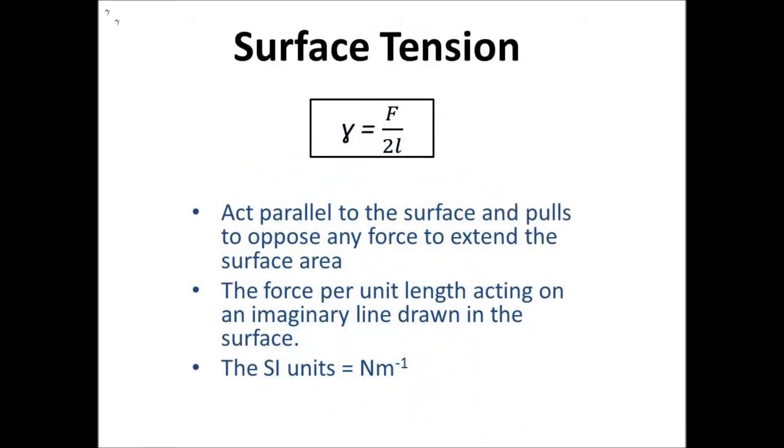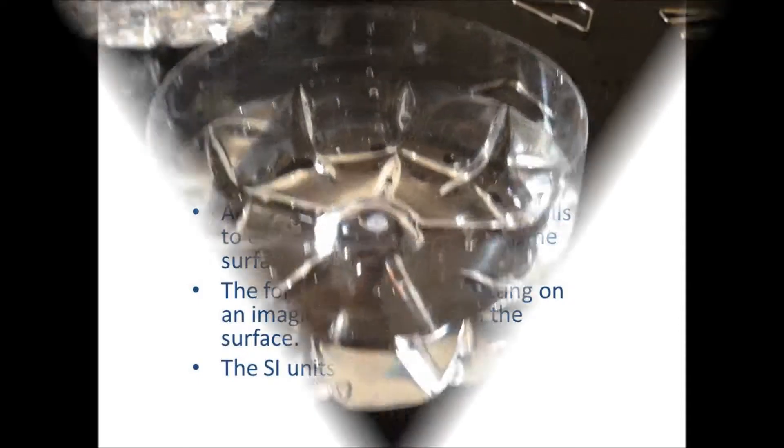What is surface tension? Surface tension acts parallel to the surface and pulls to oppose any force to extend the surface area. Surface tension equals the force per unit length.